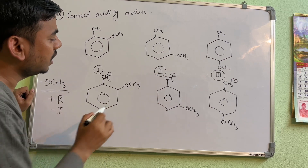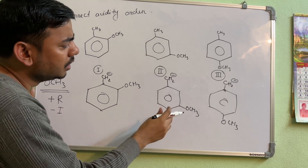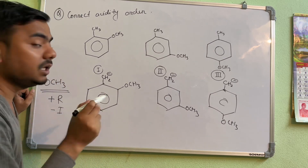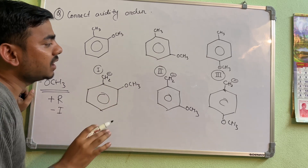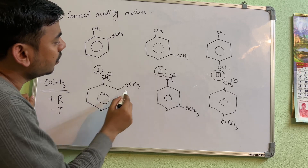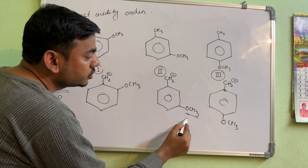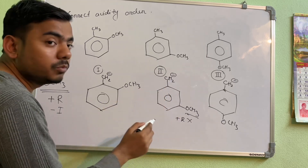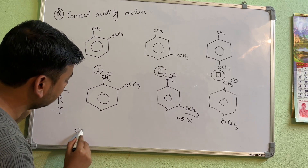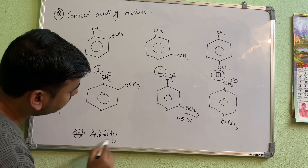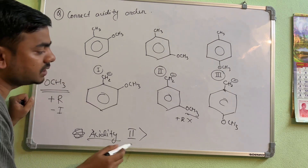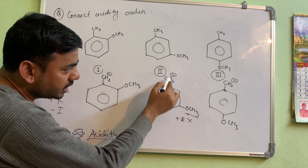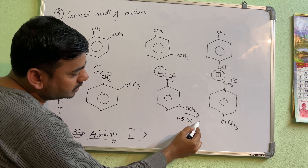So you need a −I or −R type group to reduce the negative charge and stabilize the conjugate base. The +R effect is electron-donating — the opposite of what we want. Now, importantly, only ortho and para positions show +R; the meta position does not show +R. Since meta is not showing +R, it makes this compound the most stable conjugate base, meaning compound two (meta) is the most acidic.